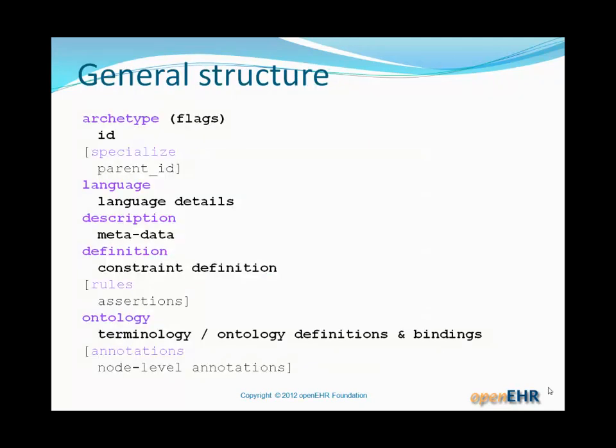Just to recapitulate: the general structure has the main keywords down the left in purple, and the optional sections are shown in grey. An archetype at a minimum is going to have the archetype section, the language section, the description section, the definition section, and an ontology section.